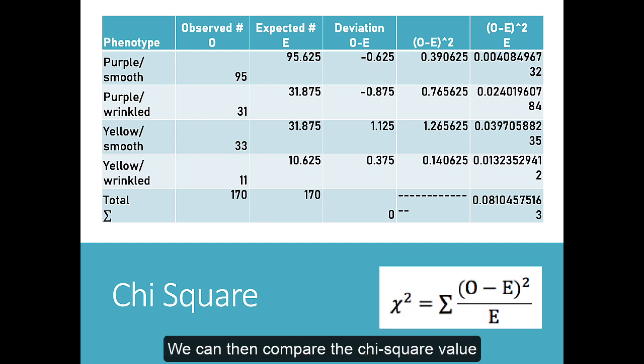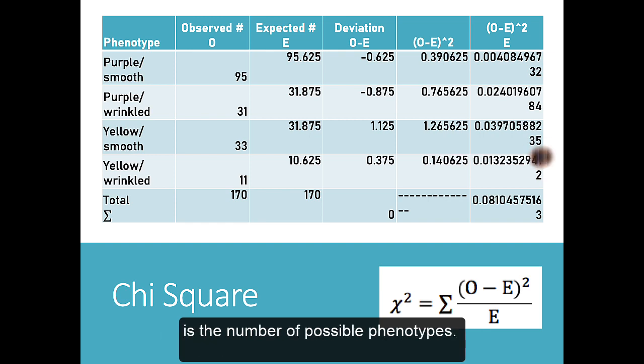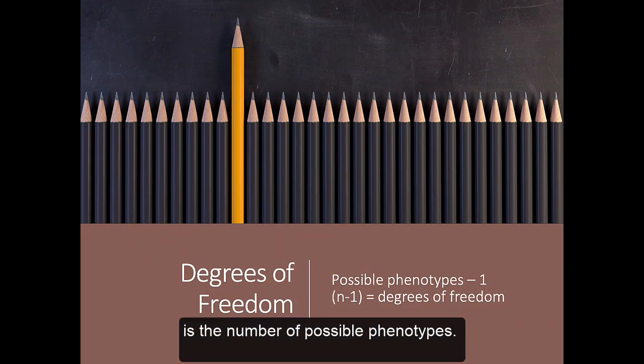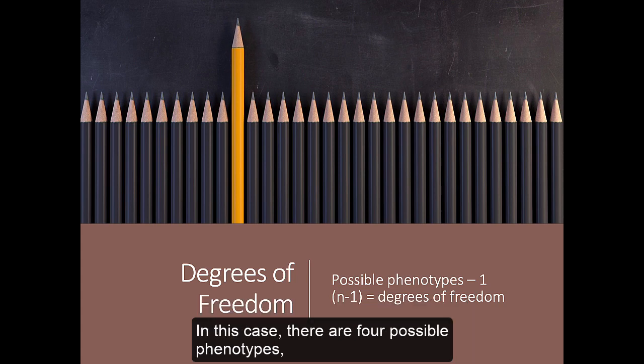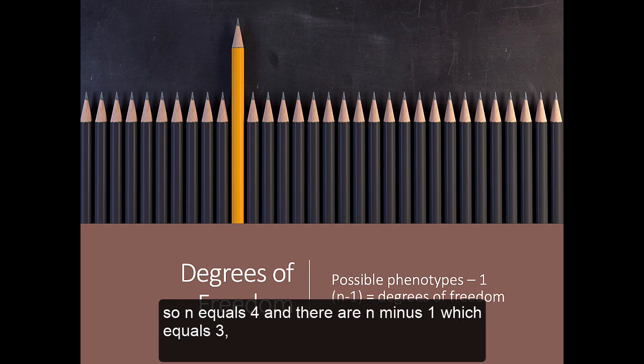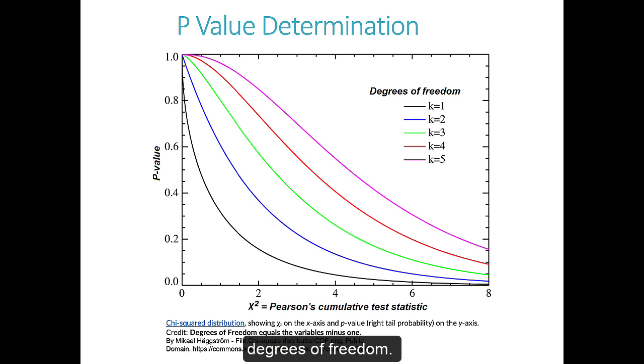We can then compare the chi-square value to a critical value or p-value from a chi-square distribution graph with n-1 degrees of freedom where n is the number of possible phenotypes. So, how do we calculate the degrees of freedom? In this case, there are 4 possible phenotypes, so n equals 4 and there are n-1 which equals 3 degrees of freedom.